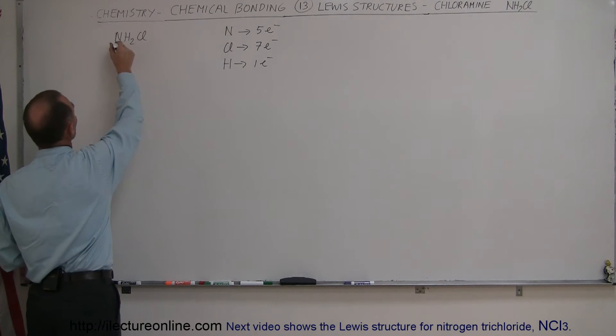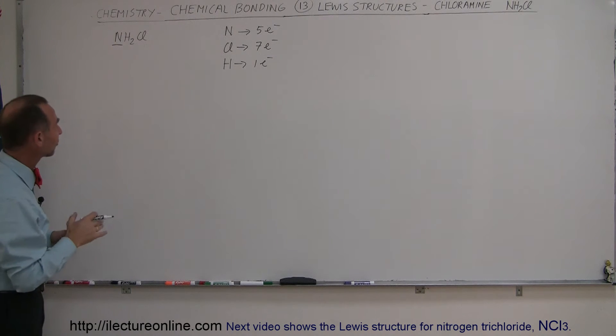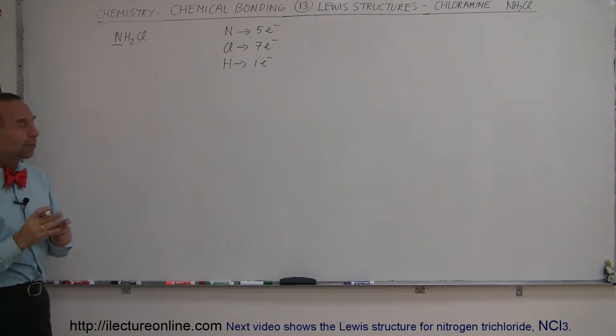On top of that, nitrogen, besides hydrogen of course—hydrogen is not going to be a central structure. Nitrogen has the lowest electronegativity between nitrogen and chlorine, so we expect that to be the central member of the molecule. Also, it has only five valence electrons, again, is the best candidate.